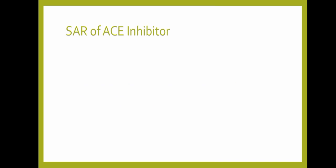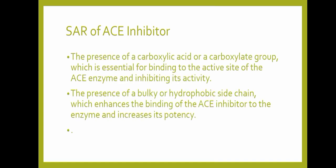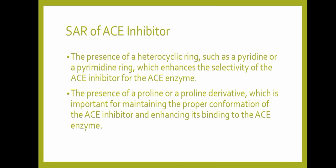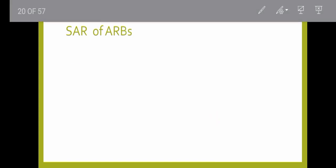Structure-activity relationship of ACE inhibitors. The presence of a carboxylic acid or carboxylate group is essential for binding to the active site of the ACE enzyme and inhibiting its activity. The presence of a bulky or hydrophobic side chain enhances binding and increases potency. A heterocyclic ring such as a pyridine or pyrimidine ring enhances the reactivity of the ACE inhibitor. The presence of a proline or proline derivative is important for maintaining proper conformation and enhancing binding.